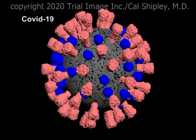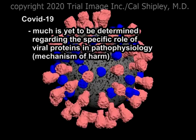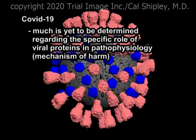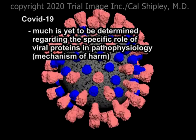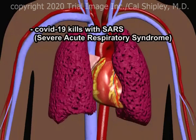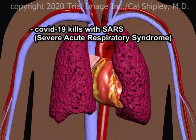While many important aspects of COVID-19's pathophysiology have already been uncovered, much scientific research still lies ahead in determining how the complex of proteins in its structure facilitate its mechanism of harm. When COVID-19 kills, it does so by causing Severe Acute Respiratory Syndrome, or SARS, in the infected individual.